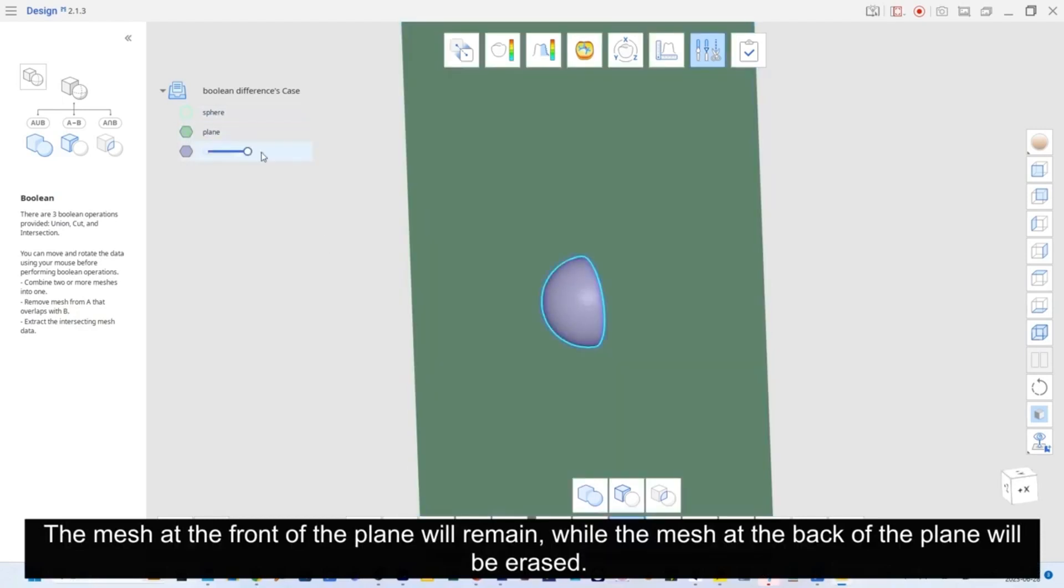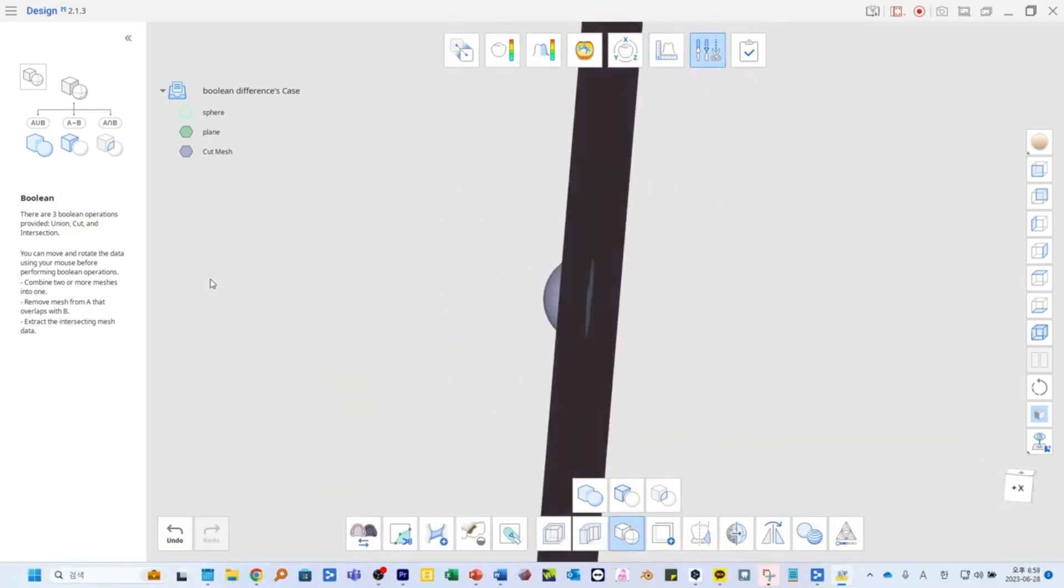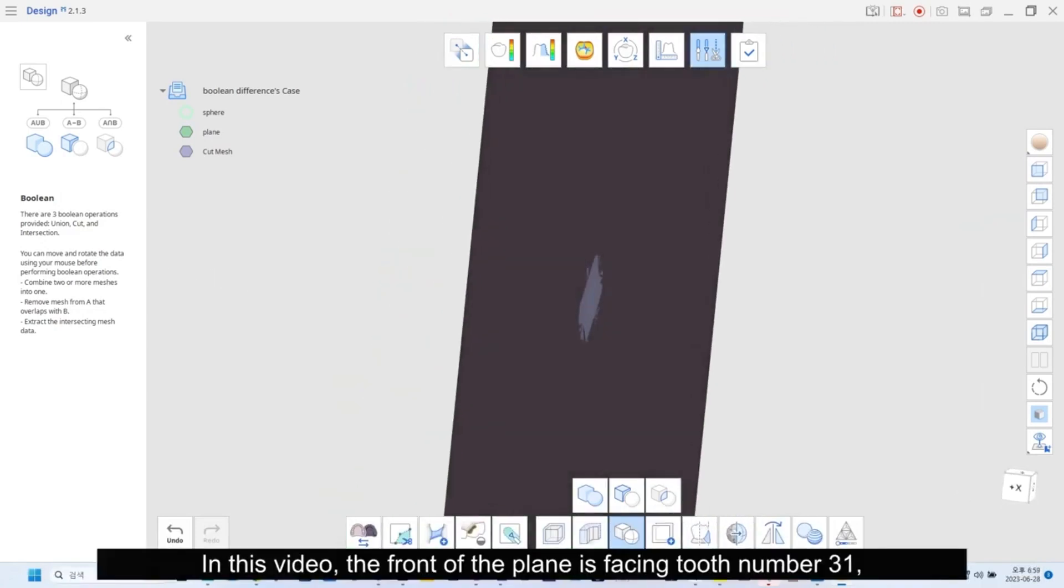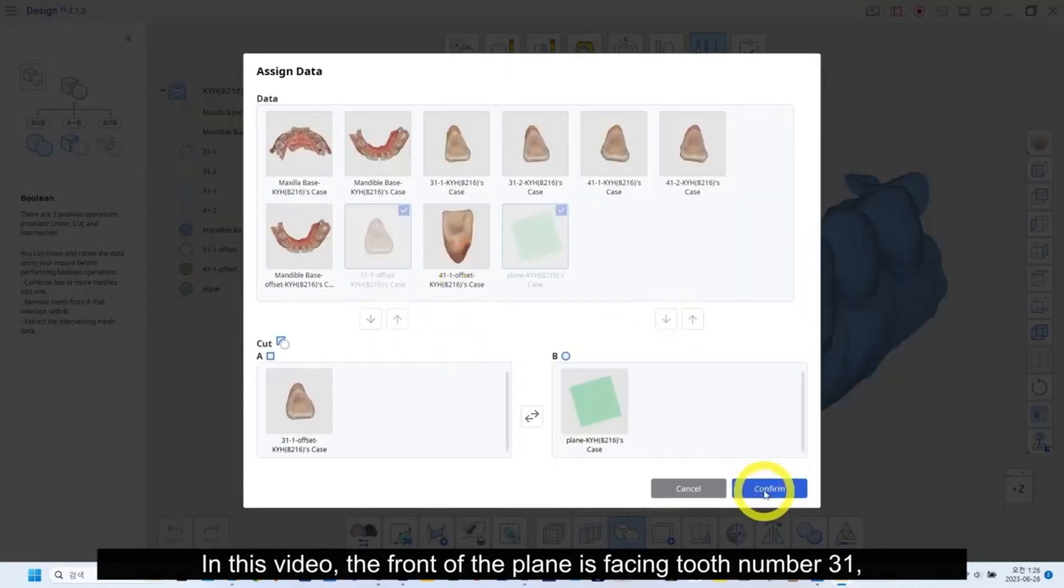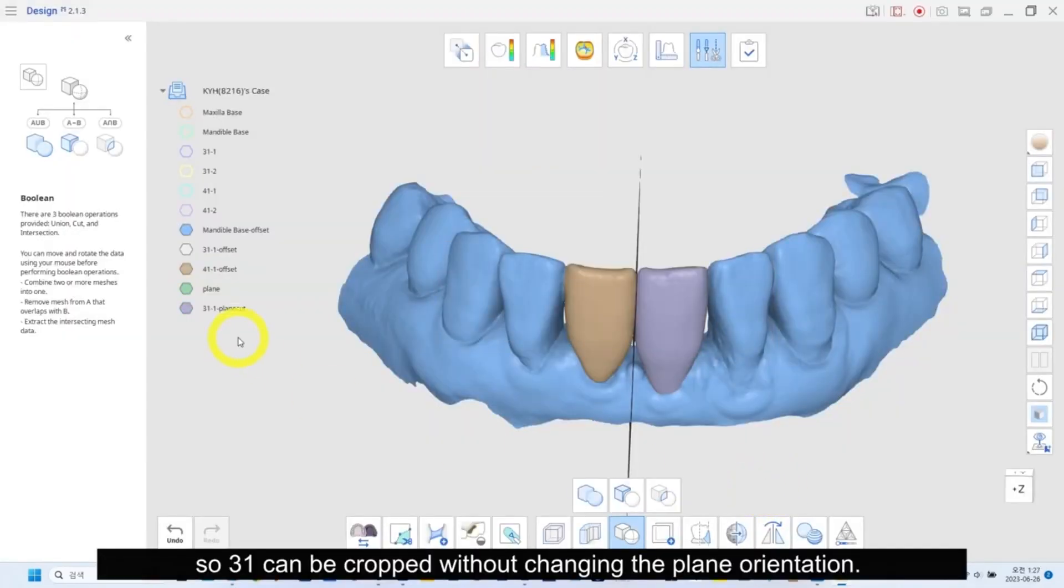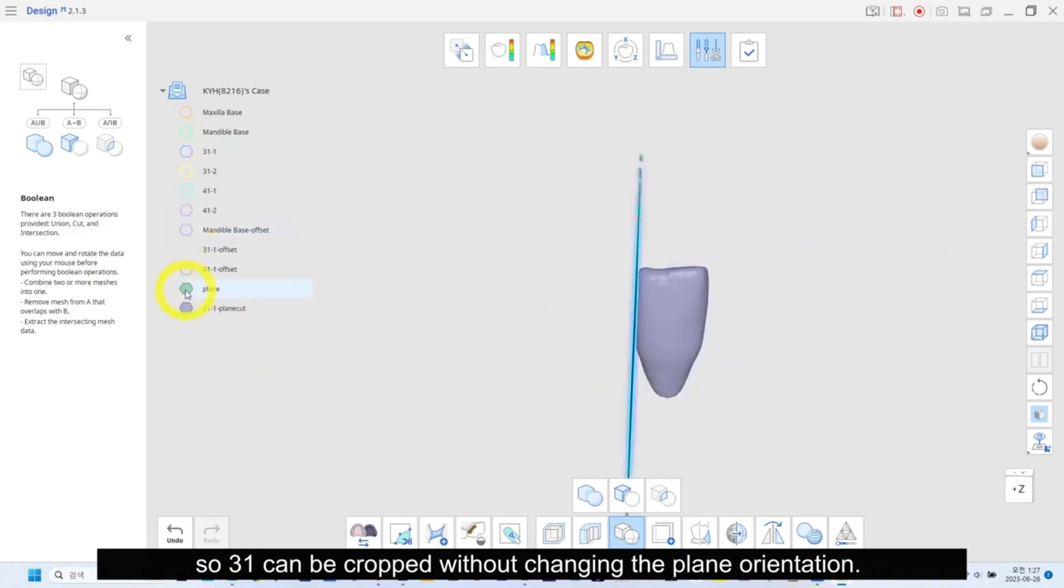The mesh at the front of the plane will remain, while the mesh at the back of the plane will be erased. In this video, the front of the plane is facing tooth number 31. So, 31 can be cropped without changing the plane orientation.